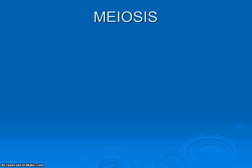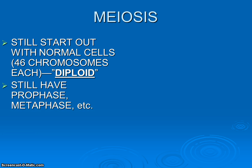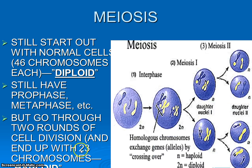So how exactly is it different? To start off with the basic points: we still, just as in mitosis, are going to start out with normal cells — 46 chromosomes, two sets of 23. Because they have two sets of 23, we refer to them as diploid. Note the prefix di — two sets, one from mom, one from dad. But we're going to go through two rounds of cell division instead of one, and end up with four cells that have 23, or half the number of chromosomes — and the term for that is haploid. It kind of looks and sounds like half.